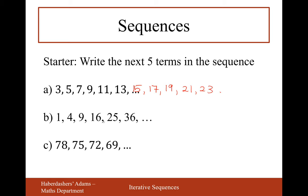The pattern in part B is not to add something each time. It's the square numbers. You can see it's 1, 4, 9, 16, 25, 36. The next one will be 49, then 64, then 81, then 100, and then 121 is 11 squared. That's the answer to part B.